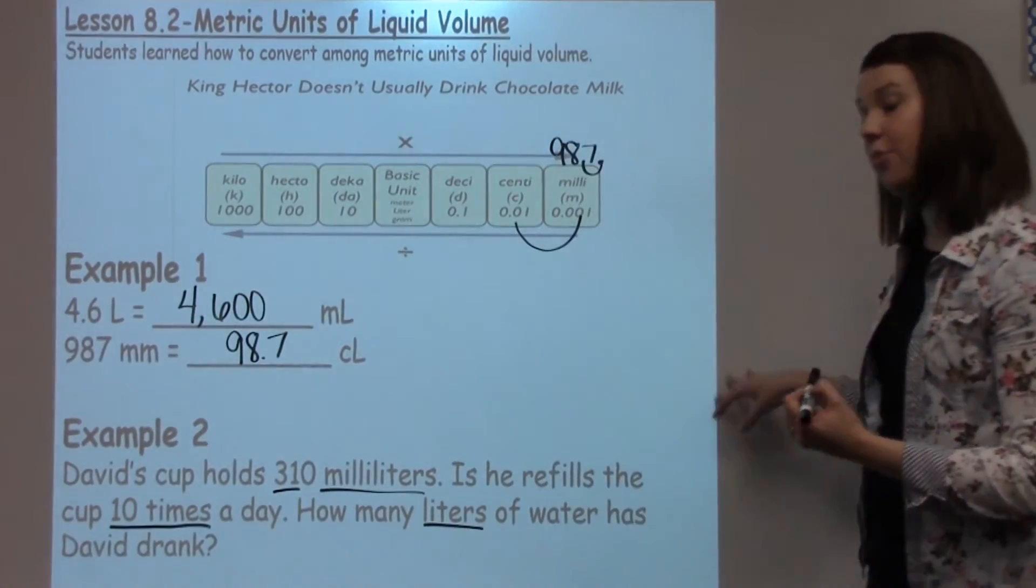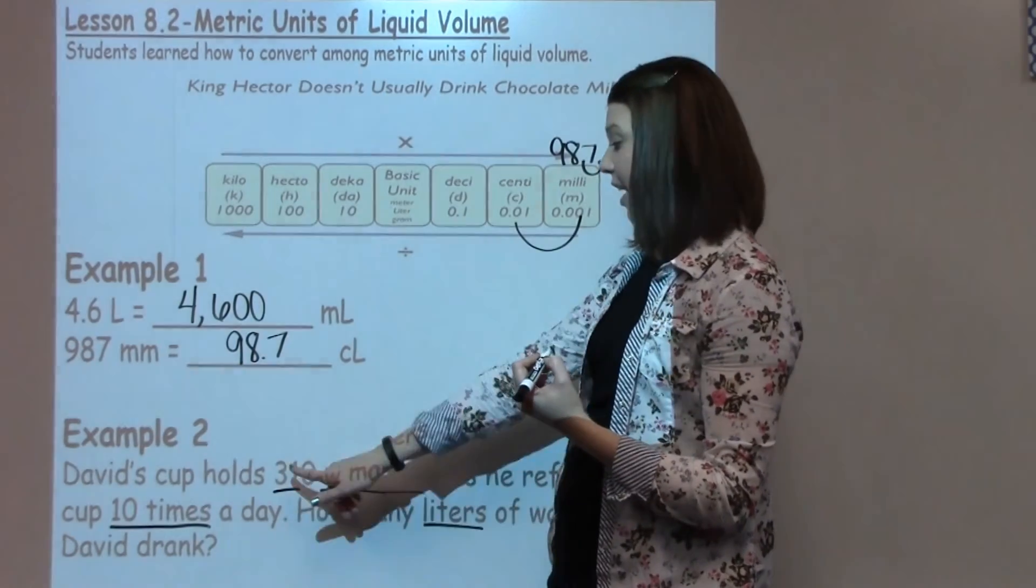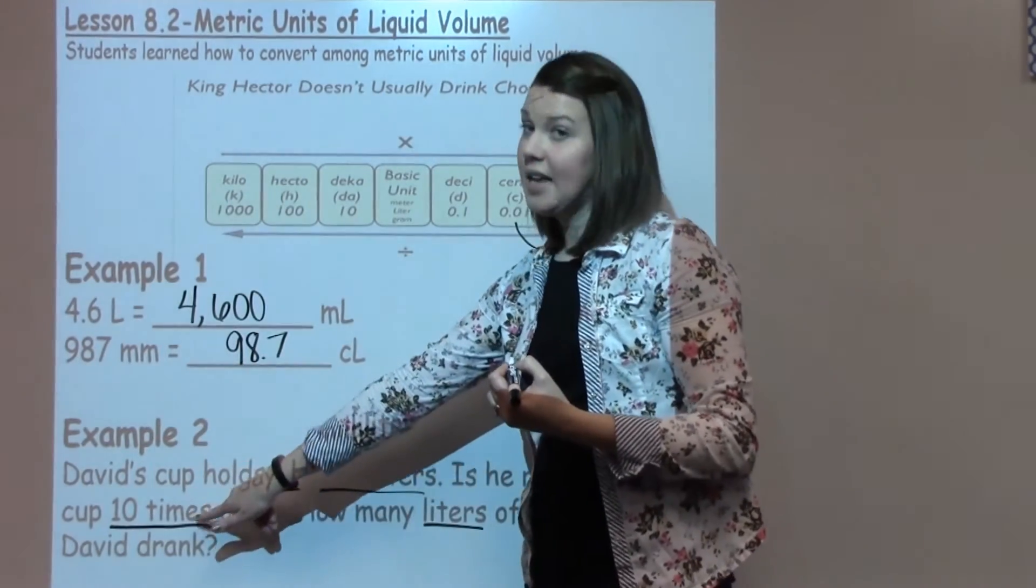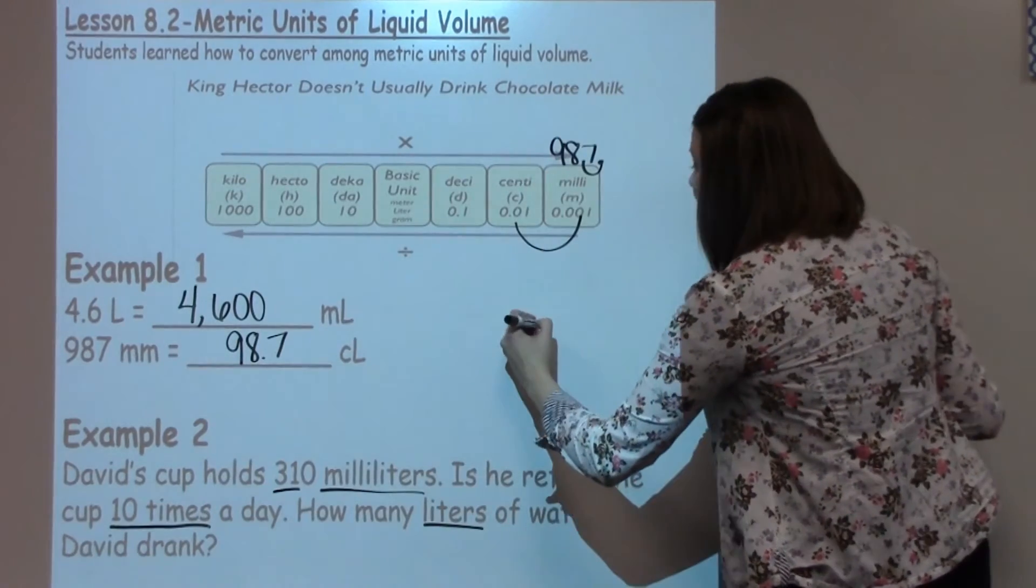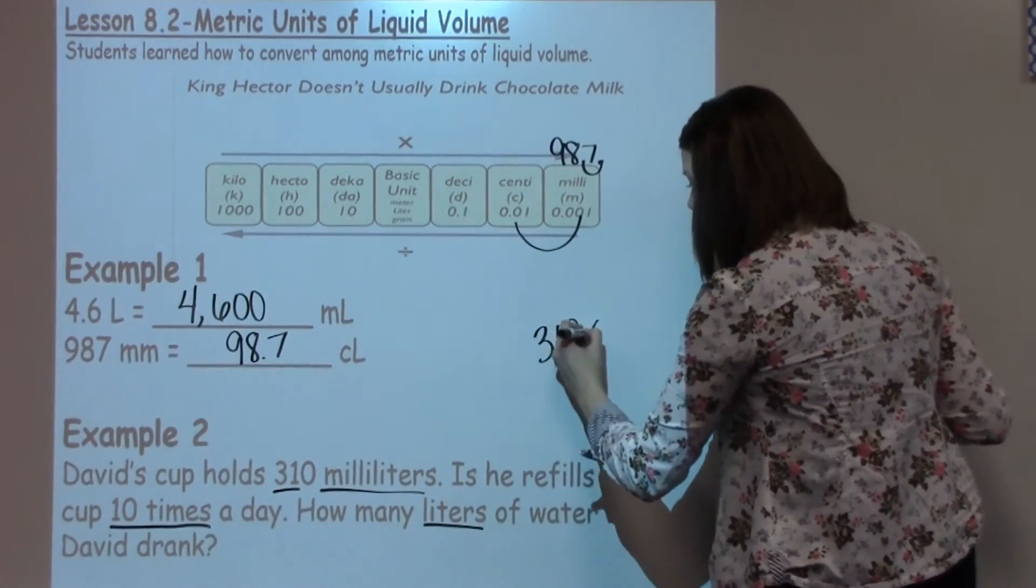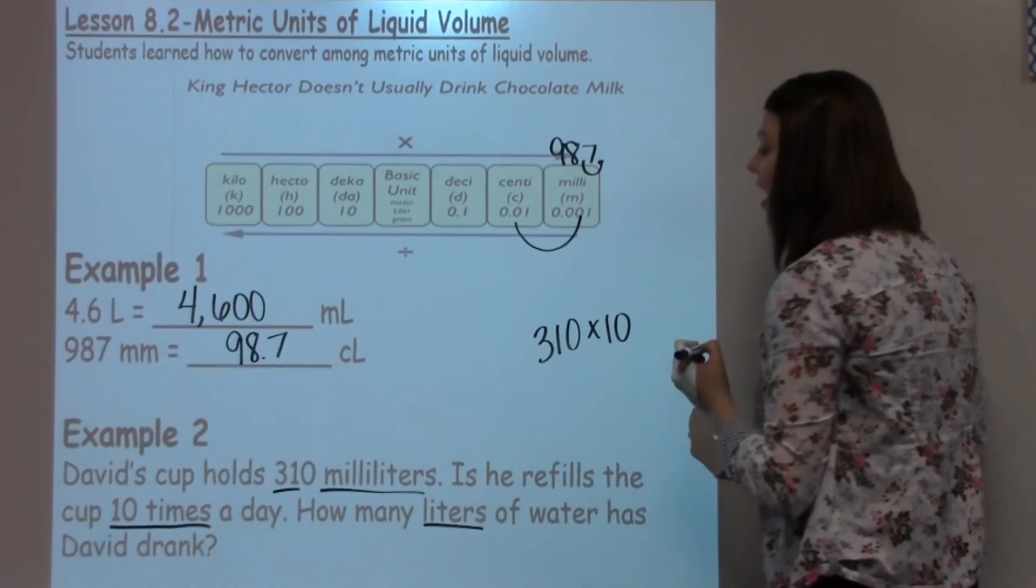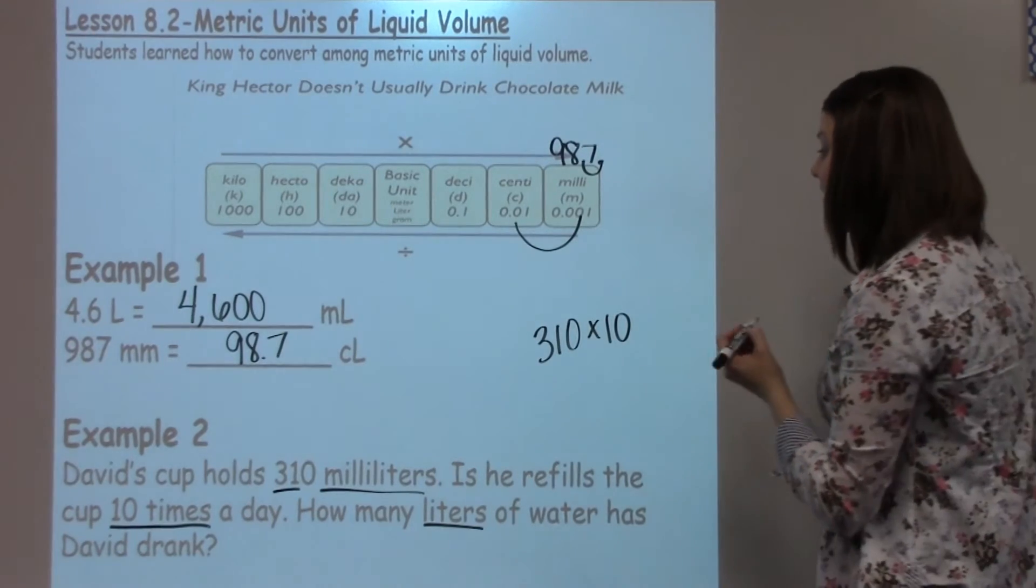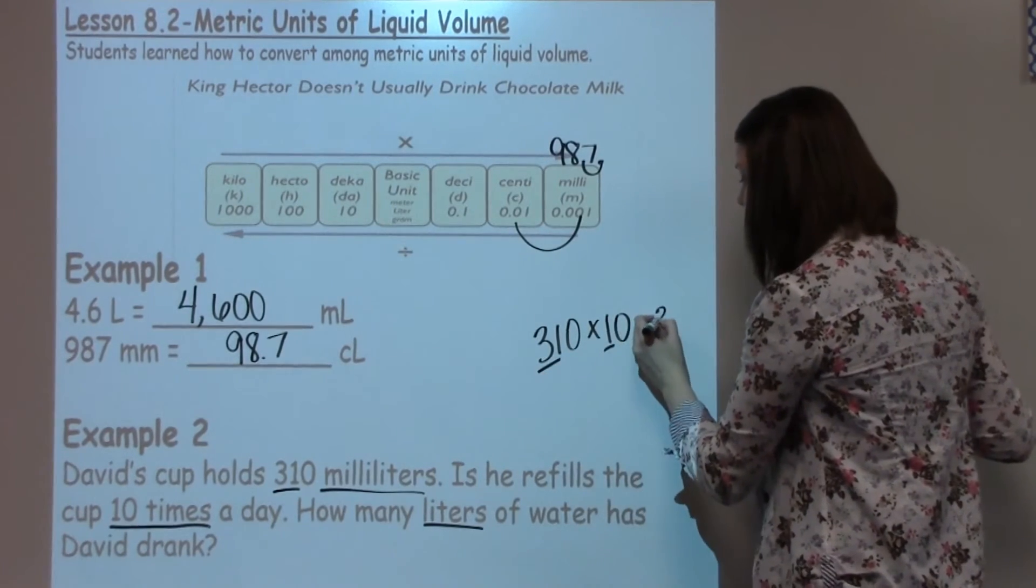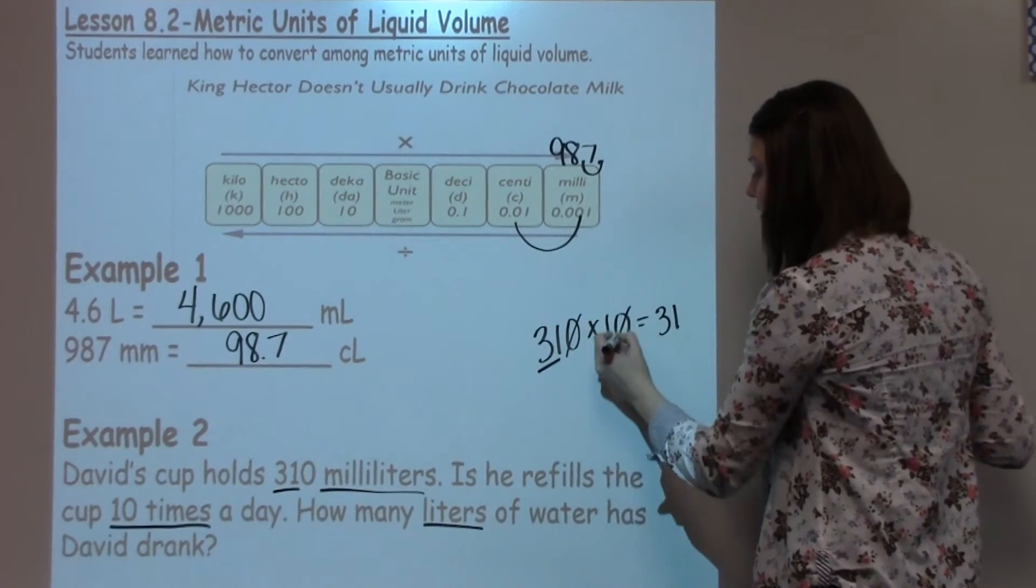Well, the first thing that I'm going to do is go ahead and do my multiplication of my 310 times by 10 times a day. So I have 310 times 10. Now a lot of students know this is a fast fact. If I take 31 times 1 is 31, add 1, 2, 0s.